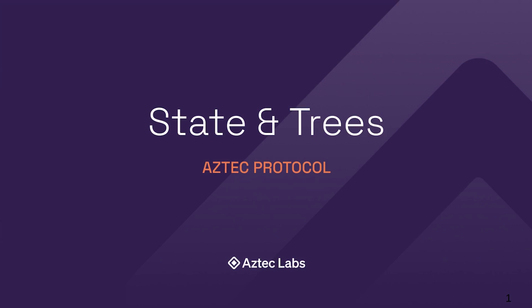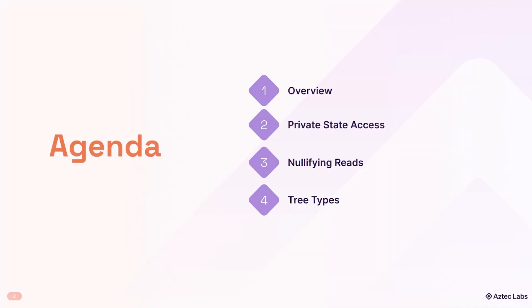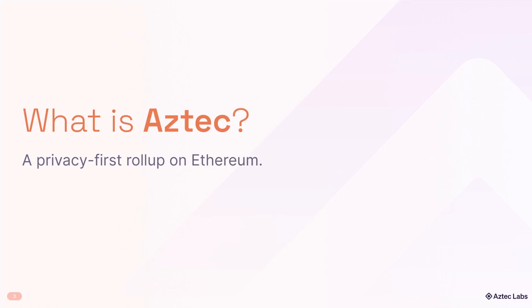In this video, I'm going to talk about state on the Aztec network and the data structures we use to store state, namely the types of Merkle trees we use. First I'll do a quick intro to Aztec, then I'll chat about how private state access works in Aztec and why we nullify state reads and not just state updates. Then I'll go into the specific trees that we have and what they're used for.